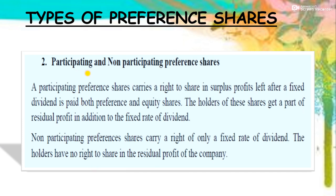Second category: participating and non-participating preference shares. A participating preference share carries a right to share in surplus profit left after a fixed dividend is paid to both preference and equity shareholders. The holders of these shares get a part of residual profit in addition to the fixed rate of dividend. सबसे first preference shareholders को fixed rate के according dividend दे दिया जाता है, फिर residual profit equity shareholders को distribute किया जाता है, और every year इसी practice को follow किया जाता है।